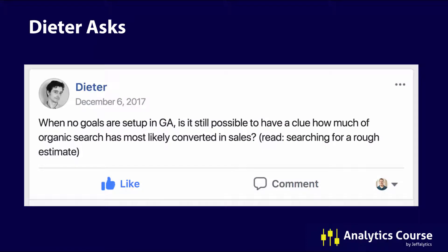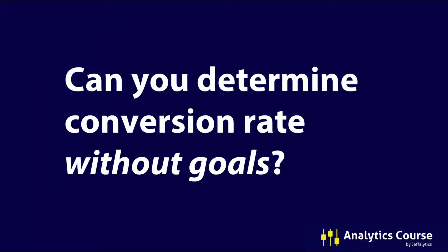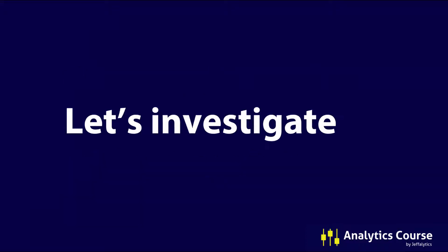That leads to situations like this. Dieter inherited an account and asks: when there's no goals set up in GA, is it still possible to have a clue how much organic search has most likely converted into sales? He just wants a rough estimate — not an exact number — but he wants to know how much of his organic search has converted. Great question. Can you determine the conversion rate without having goals in place? Let's investigate — we're going to go into Google Analytics and talk about how this works.